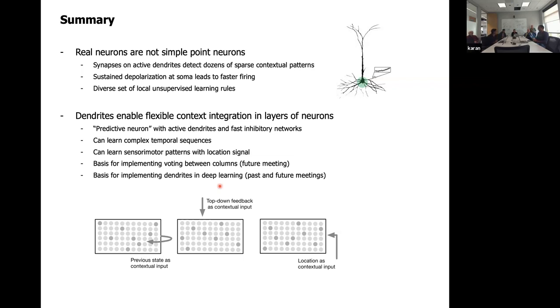One thing I appreciate about this is that early researchers were ignoring certain parts of the neuron. Function follows form — if there's part of a structure you don't understand, you shouldn't just ignore it, like we once ignored junk DNA.